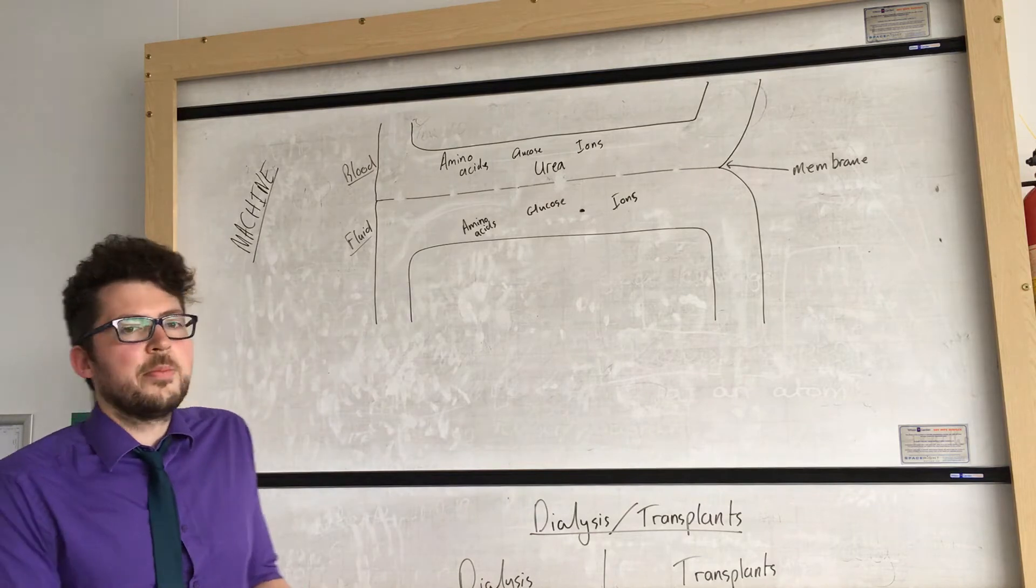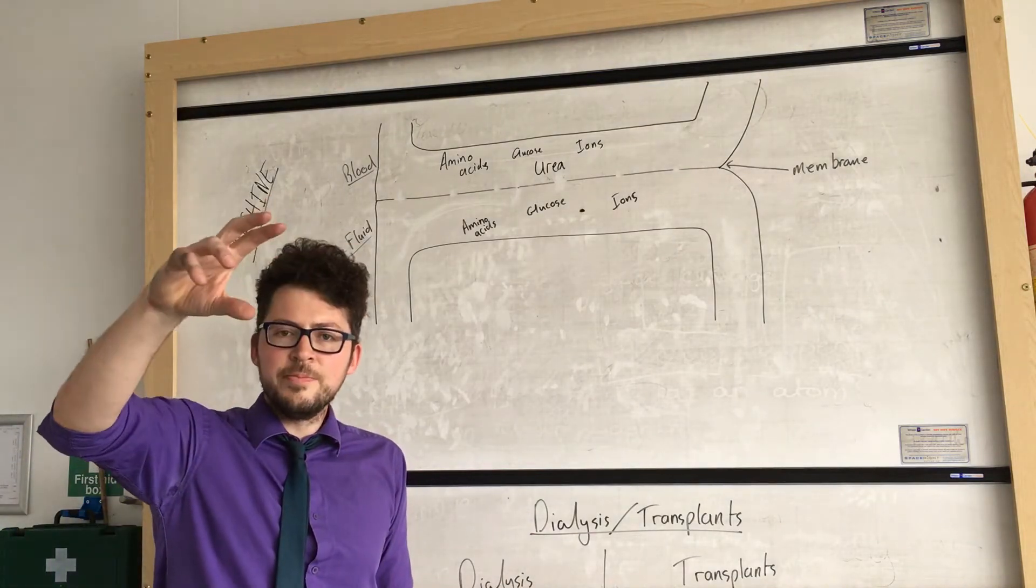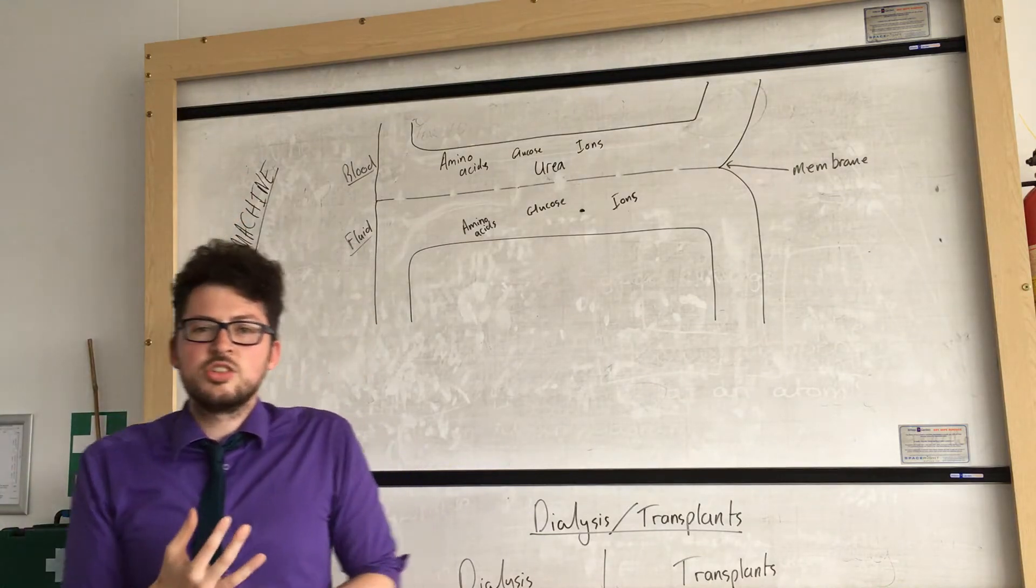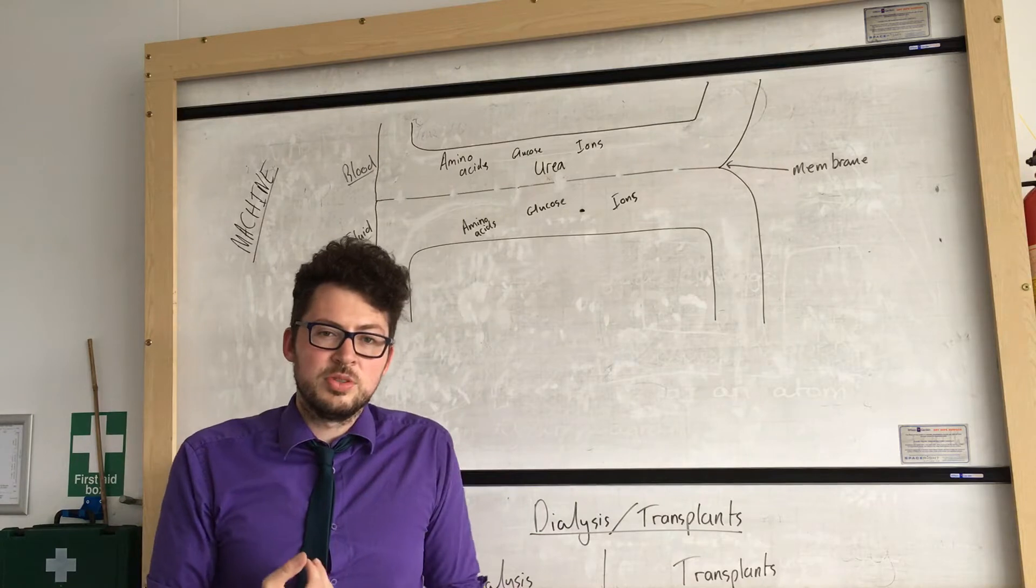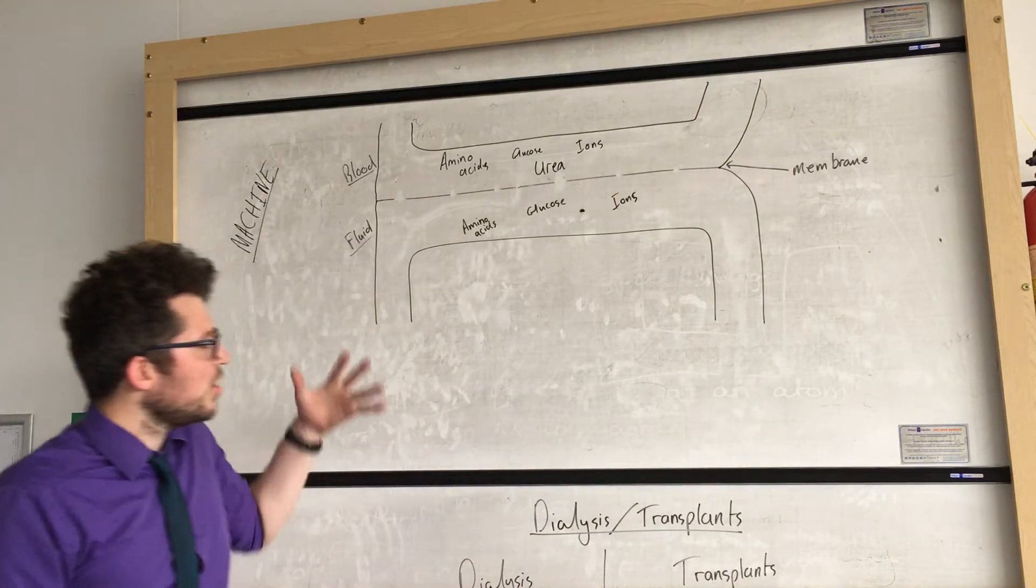So what we have is we have a person's blood being carried out of their body by tubes and then entering the machine, being cleaned and then re-enters their body. Now this process takes a good four hours to fully clean someone's blood so it's not a quick process. So how it works.